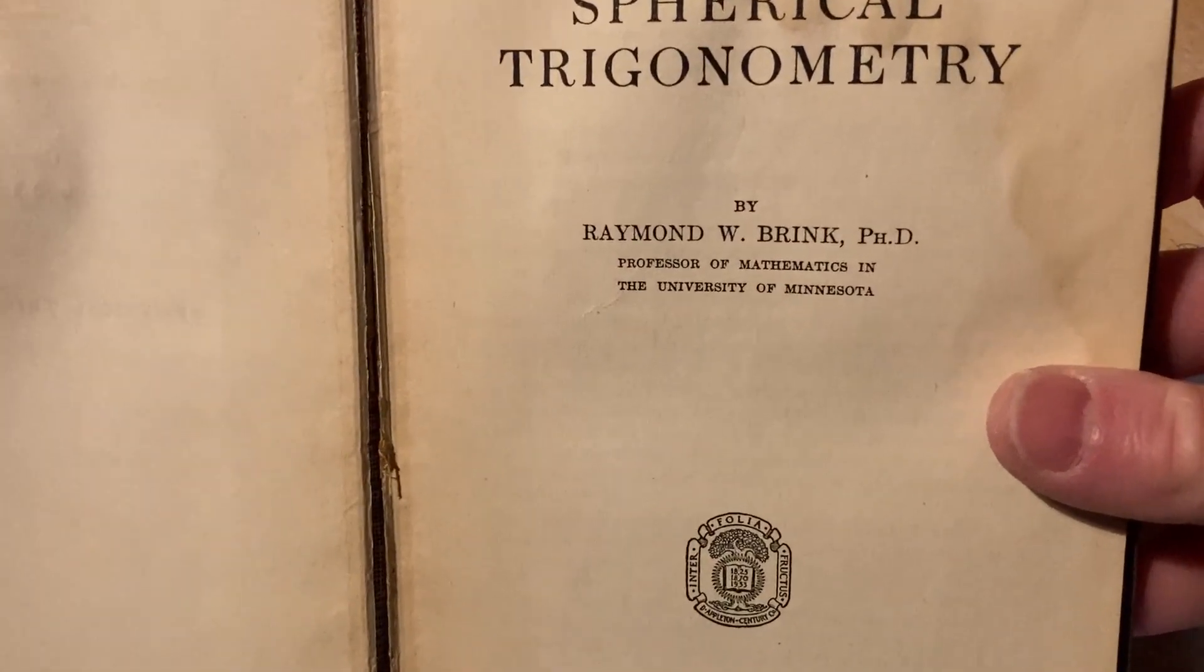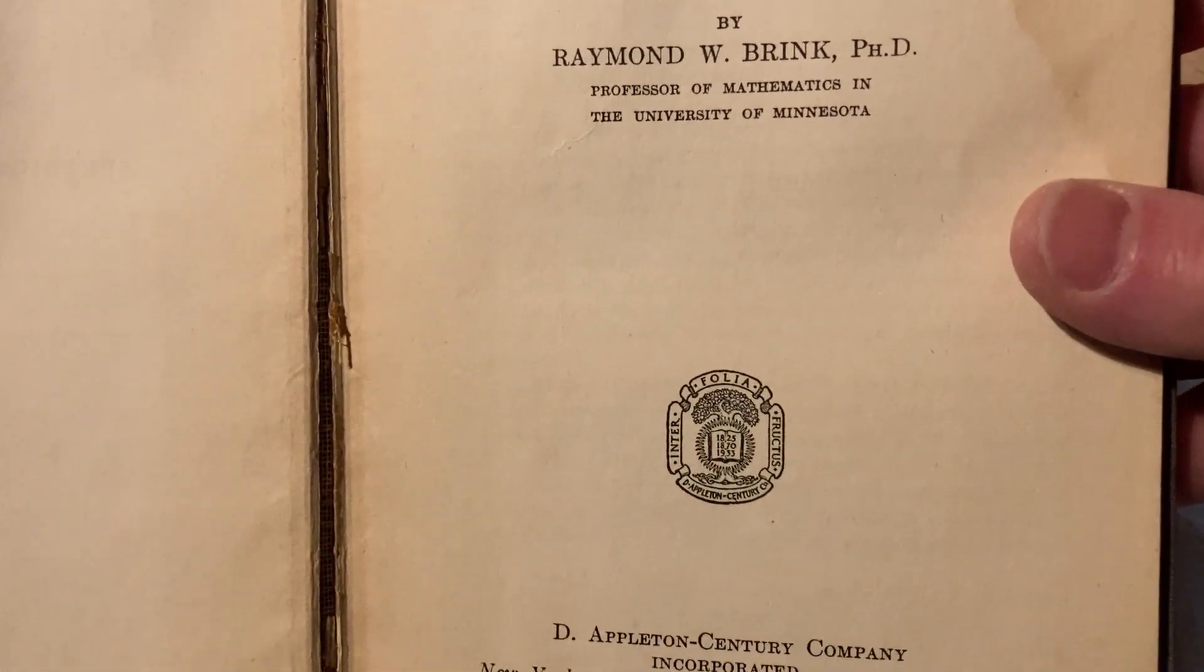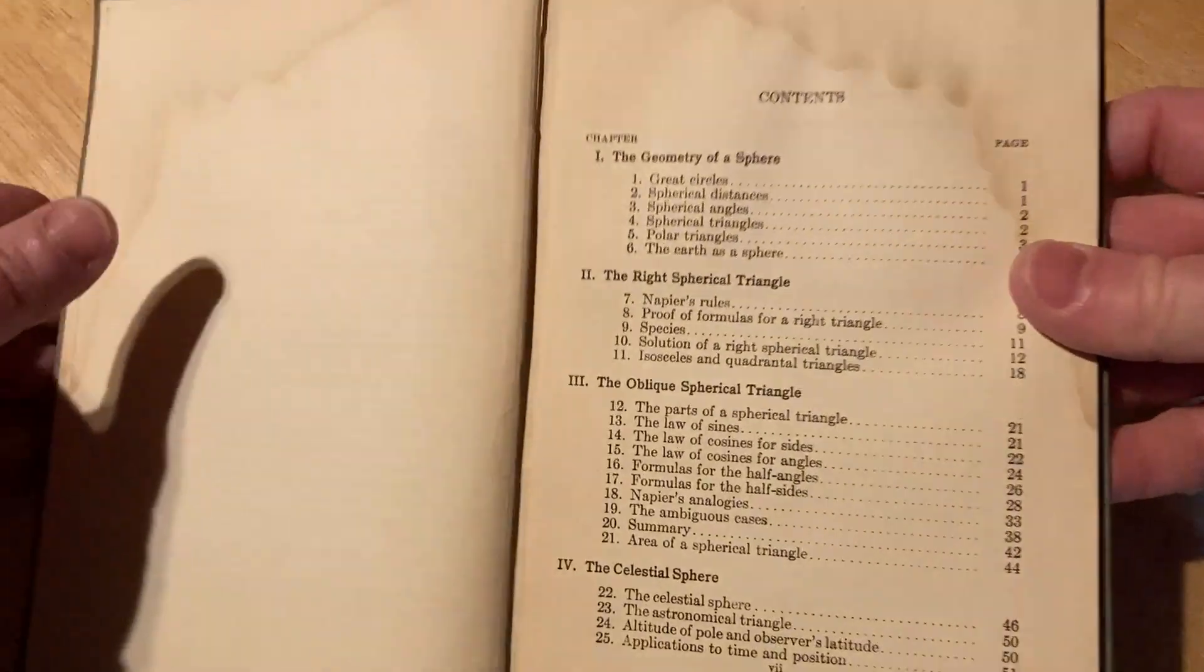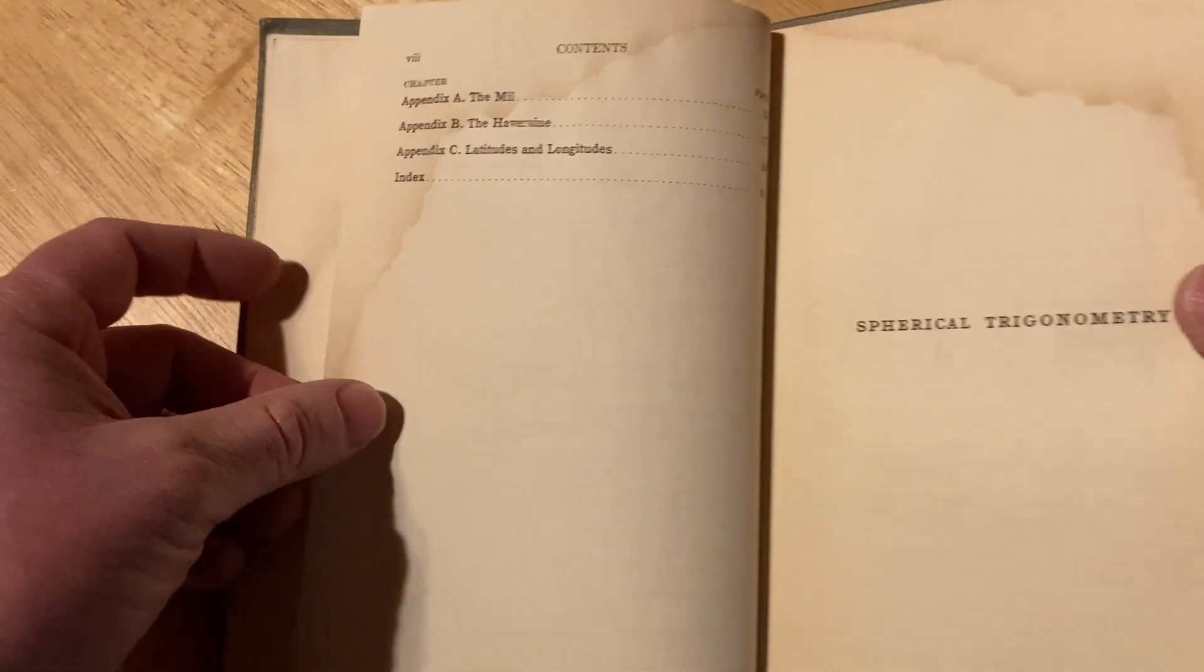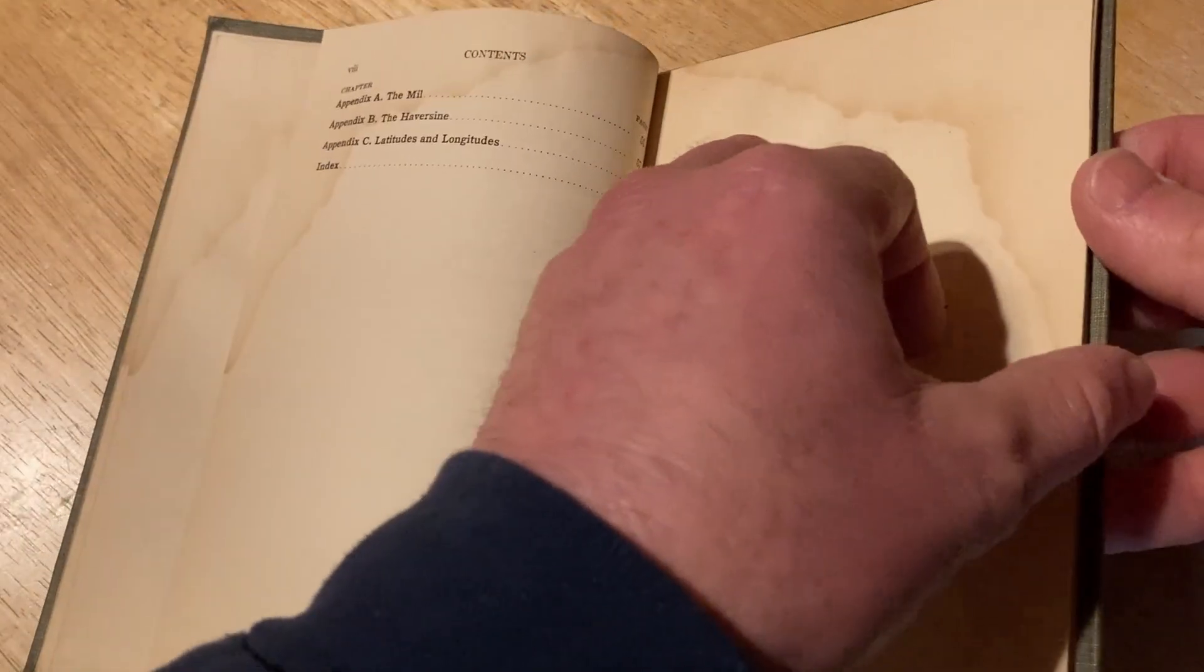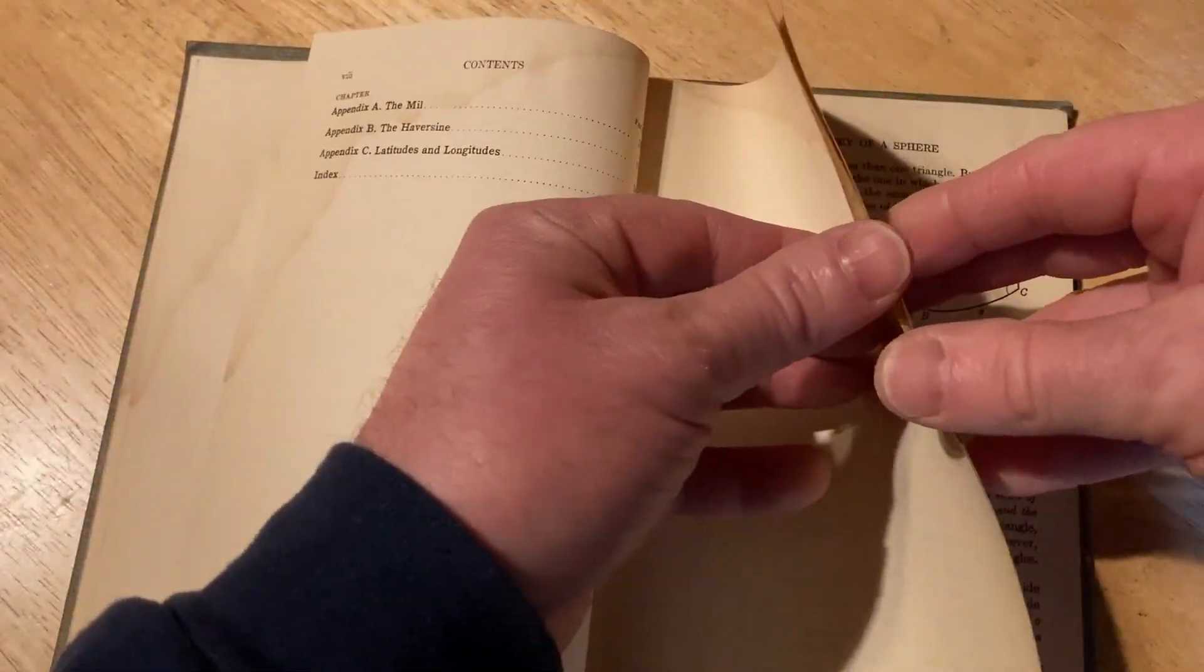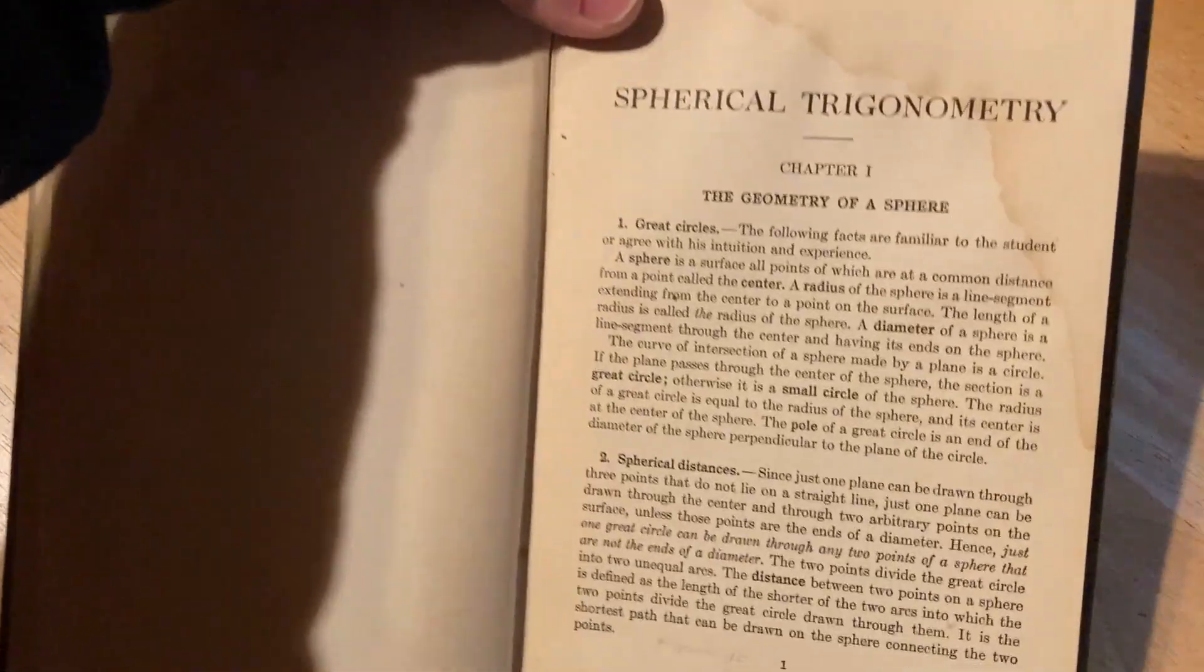This used to be something that everyone learned back in the day. Spherical trigonometry by Raymond W. Brink, Ph.D., professor of mathematics in the University of Minnesota. Here you can see the contents of this strange book. It's just really weird. Most people have never heard of spherical trigonometry.